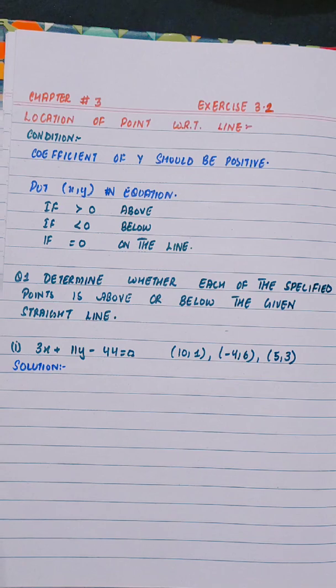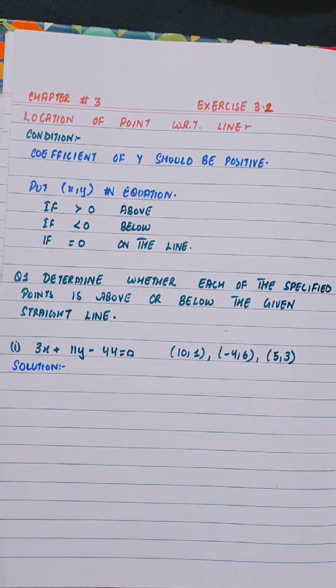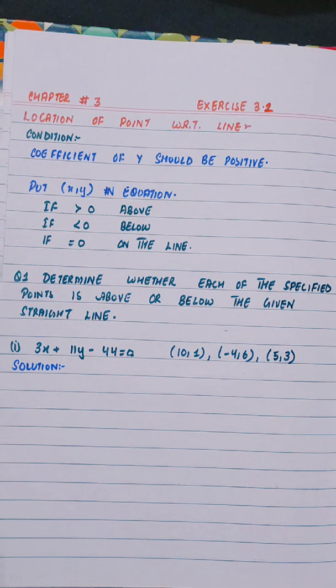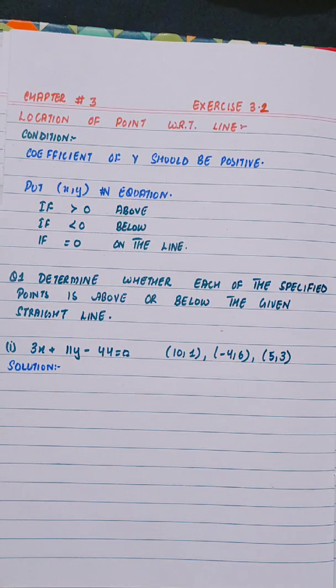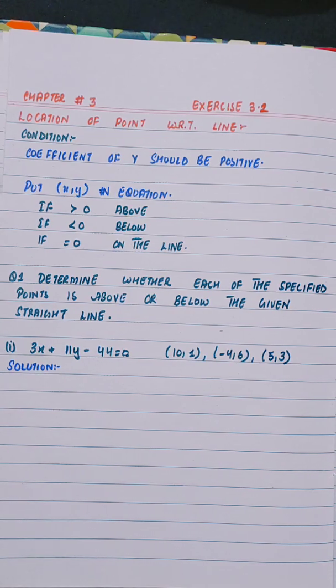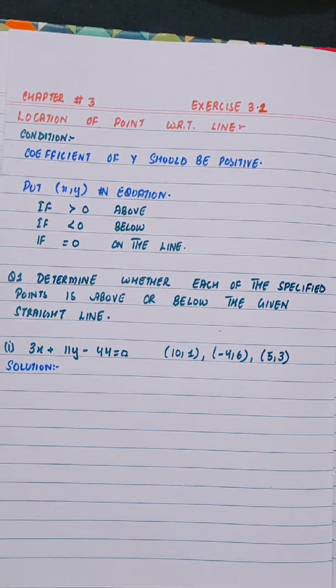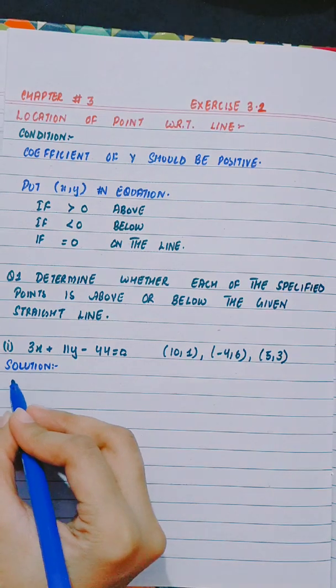Now question 1 is determine whether each of the specified points is above or below the given straight line. Part 1 is 3x plus 11y minus 44 equals to 0. And points given are: (10,1), (-4,6), and (5,3).